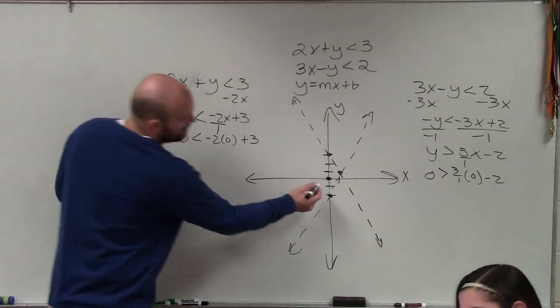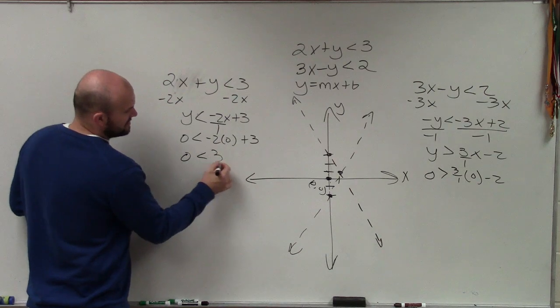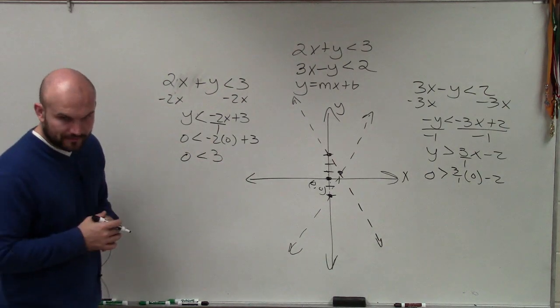So for this equation, because remember, this point 0, 0 has an x and a y-coordinate of 0, 0. So therefore, I have 0 is less than 3. Is that true or false? True.